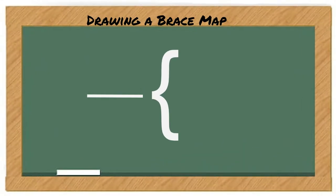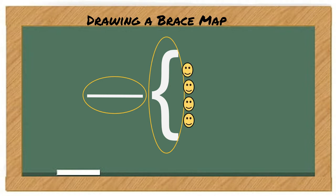When we draw a Brace Map, we need the big bracket and we need the area in front of the bracket which is where you will write the whole thing. And then inside the bracket is where you will put some of the parts, the sub-parts to the whole.